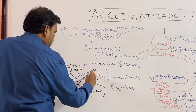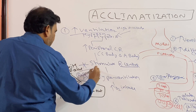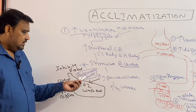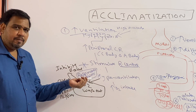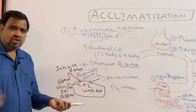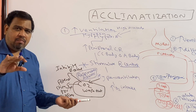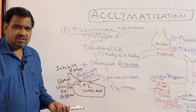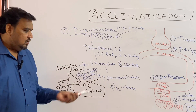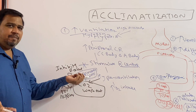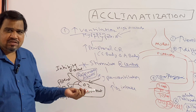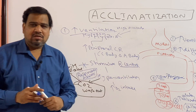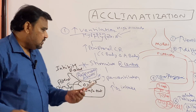This is called respiratory alkalosis. So at high altitude there is a phenomenon called respiratory alkalosis. Why alkalosis? Because carbon dioxide is washed out — carbon dioxide is the one that gets converted to H+, which is acidic. Since carbon dioxide is washed out, acidity is decreased, resulting in alkalosis. Since this is respiratory in origin, we call it respiratory alkalosis.